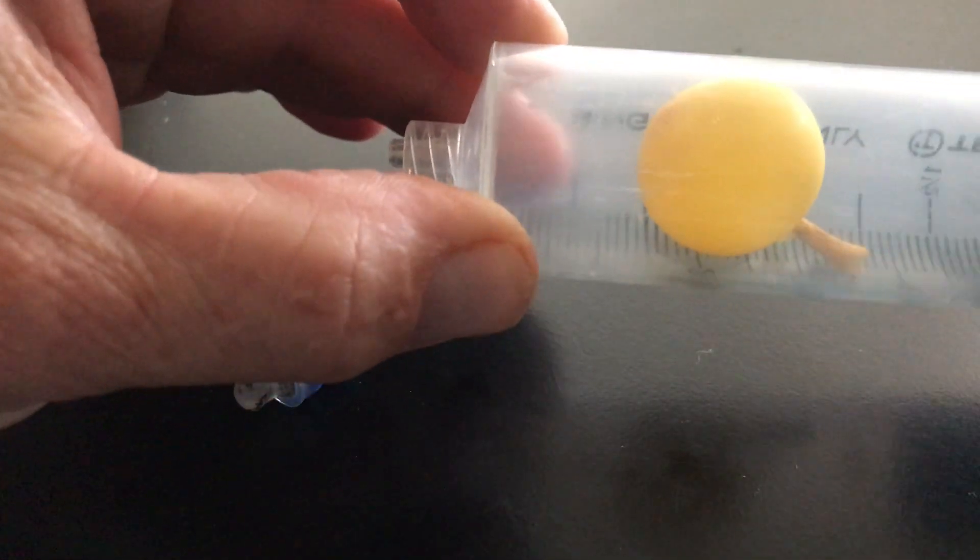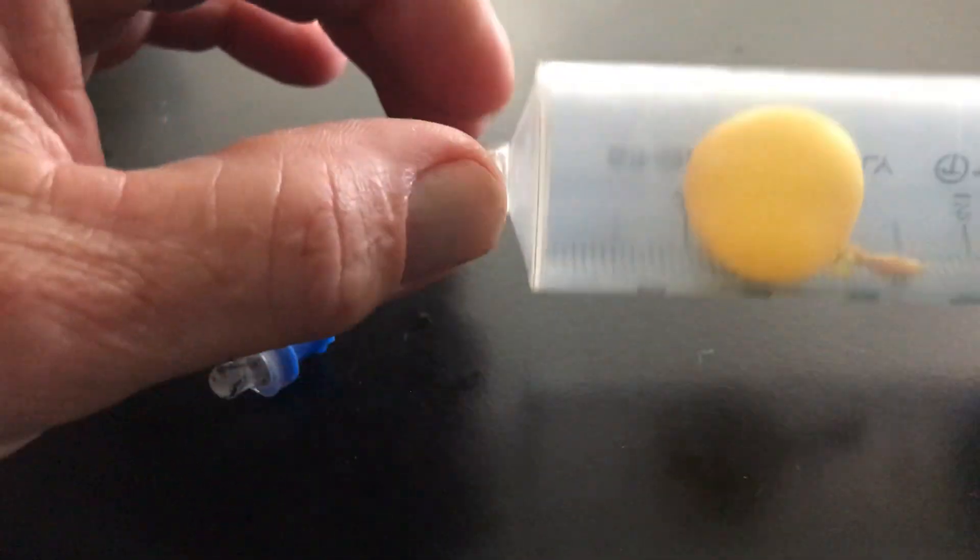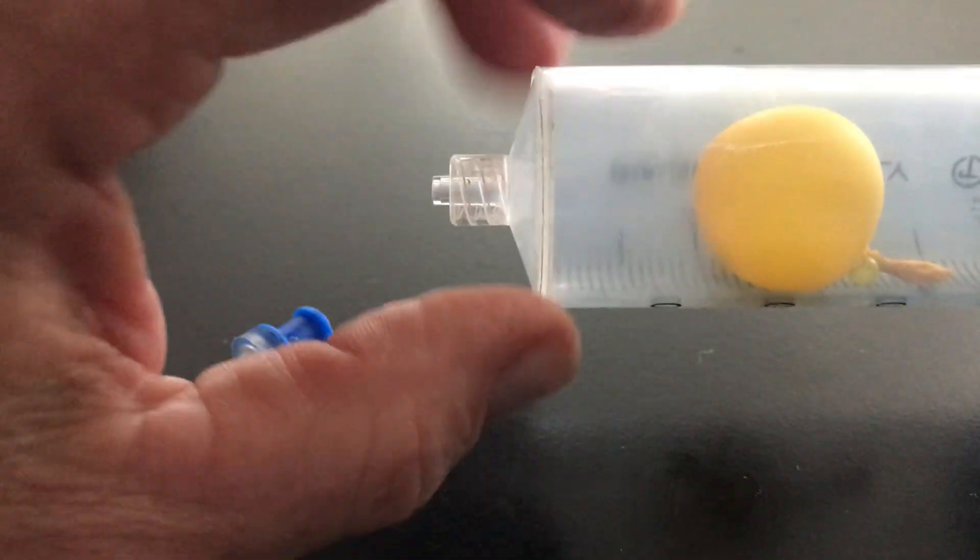We're going to talk about pressure-volume changes using this syringe and balloon system. The balloon's tied off so no more gas can get in and out of it.